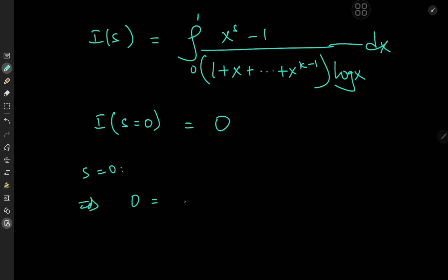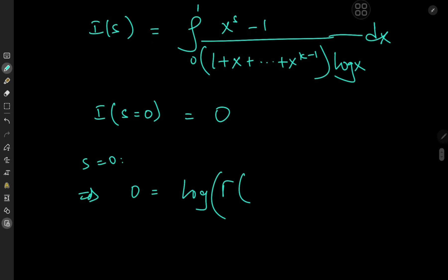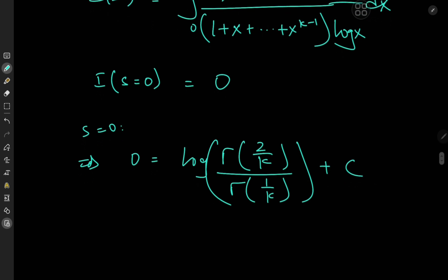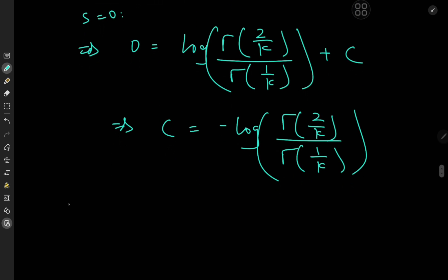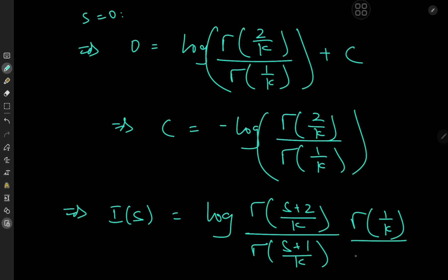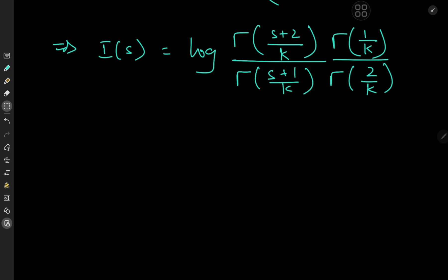On plugging in s equal to 0, we have 0 equal to the logarithm of gamma 2 by k divided by gamma 1 by k plus C, which implies that C equals negative log gamma 2 by k divided by gamma 1 by k. That means I of s equals the logarithm of gamma s plus 2 by k divided by gamma s plus 1 by k times gamma 1 by k divided by gamma 2 by k. And there you have it, we have solved the integration problem with this really exotic closed form in terms of the logarithm of this assortment of gamma functions.